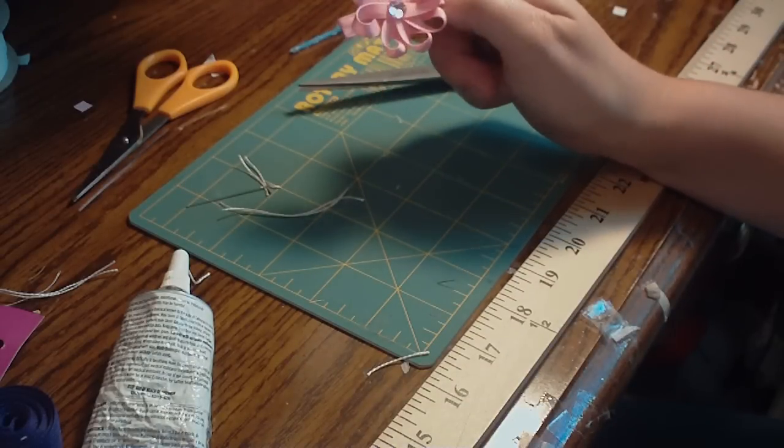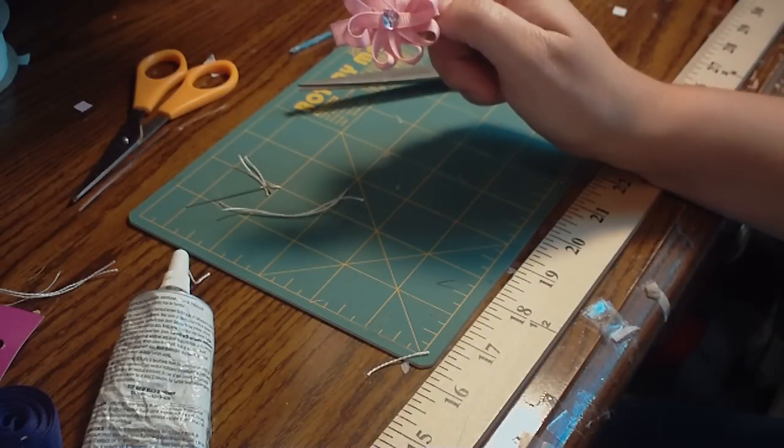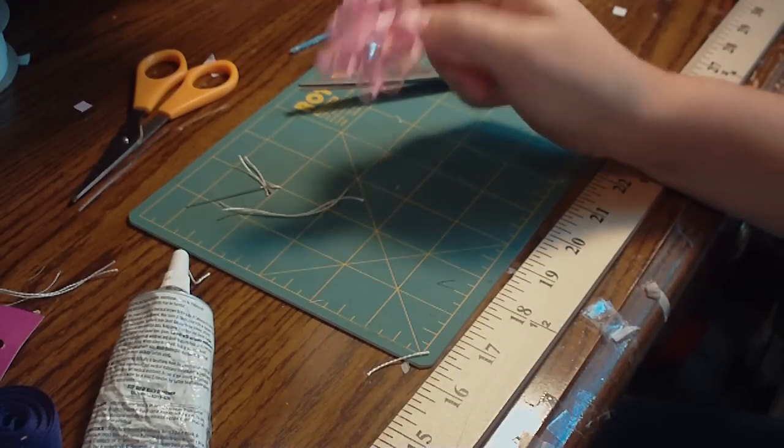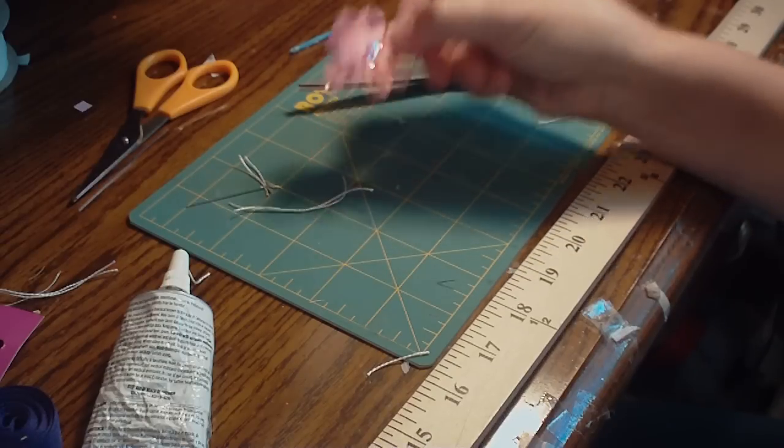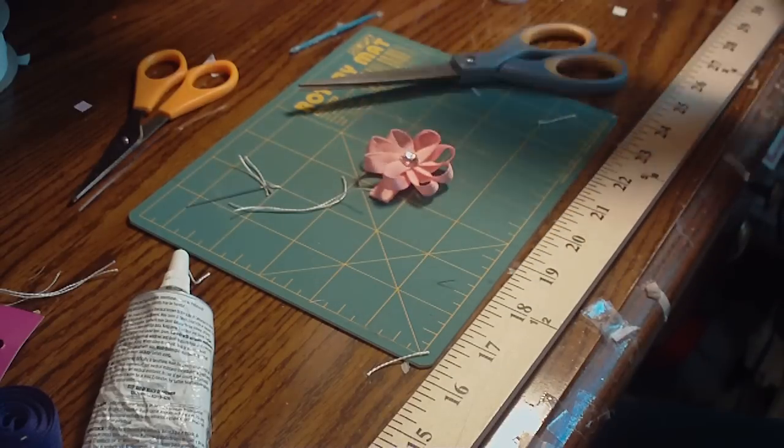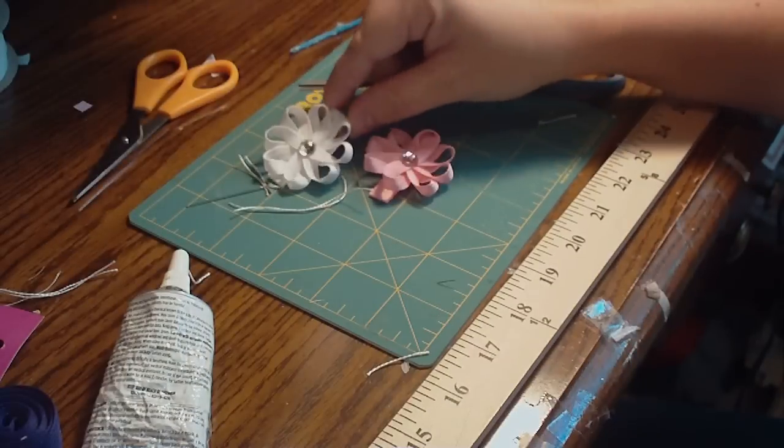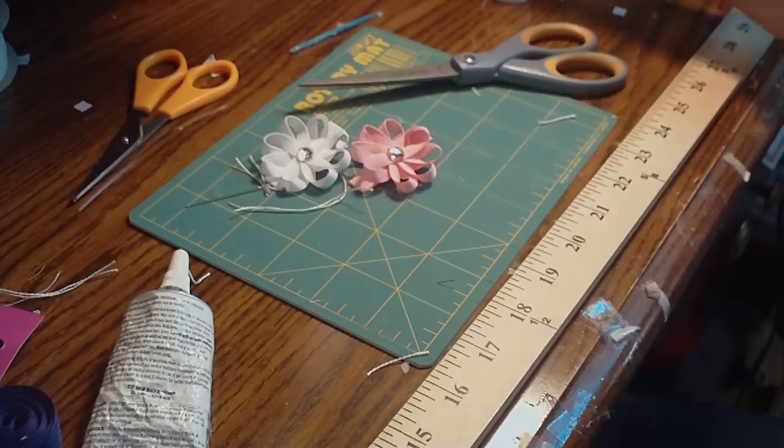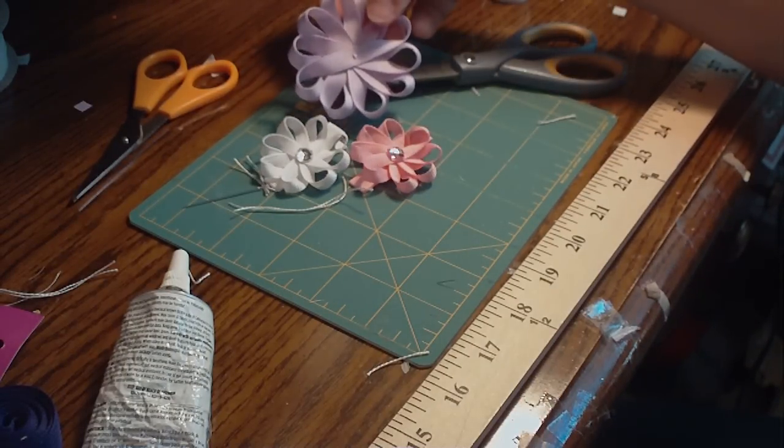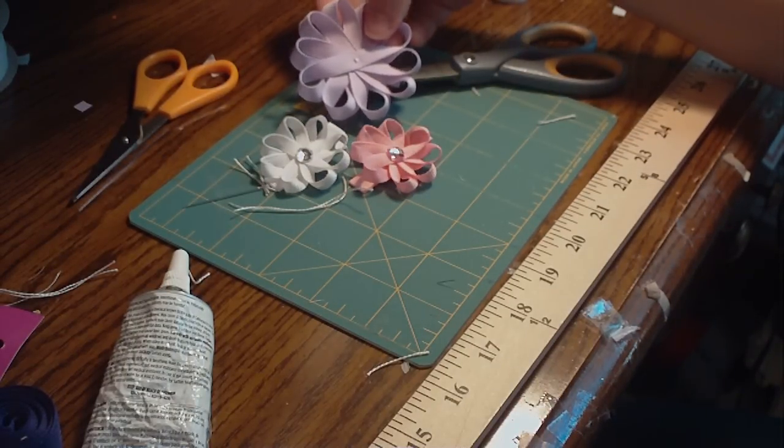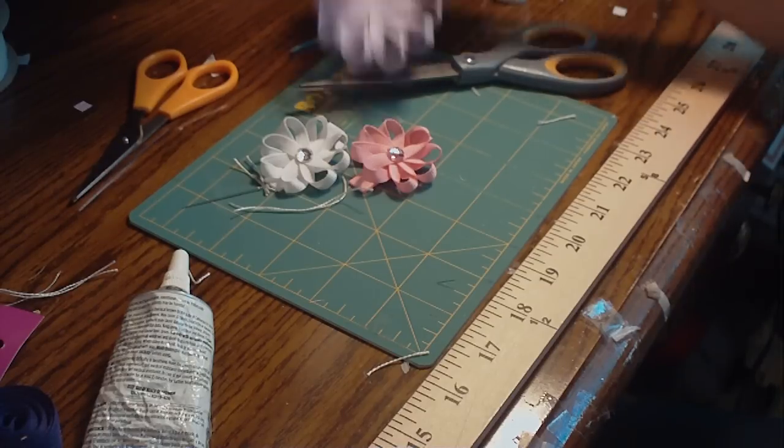So there you go. There's a small ribbon hair flower in pink. And you're all set on an alligator clip. And here's a white one that we've done also. So that's the small. This is a large, so you can see the difference. And then I also do a medium size one. See you next time.